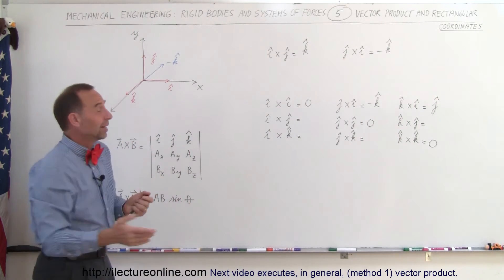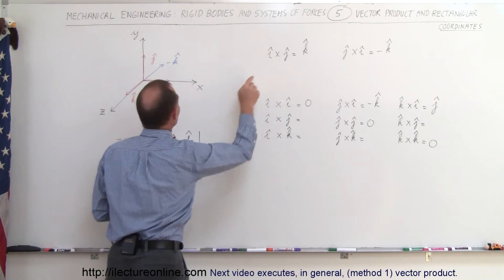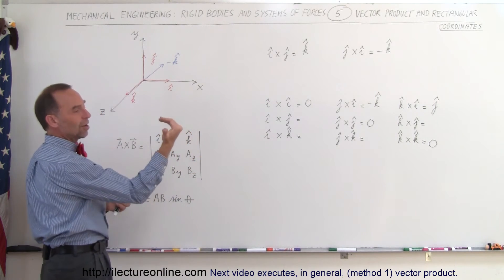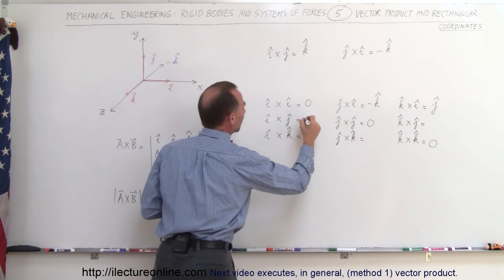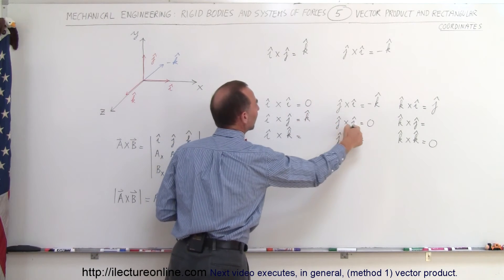Alright, how about I cross J? Well, we already did that. I cross J is equal to K. So I cross J, thumb points out of the board, that would be positive K.